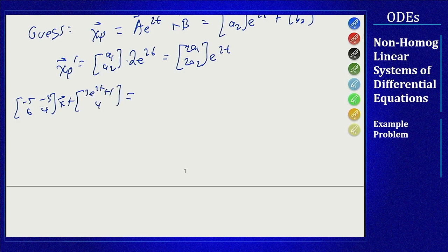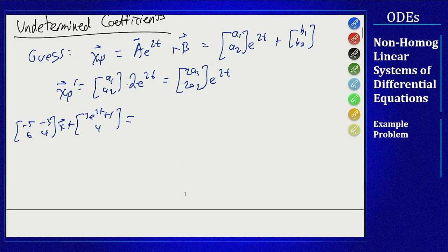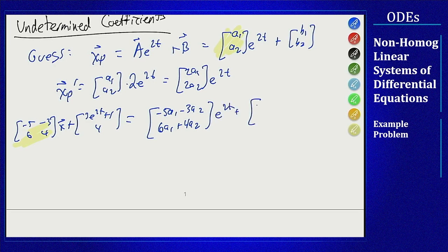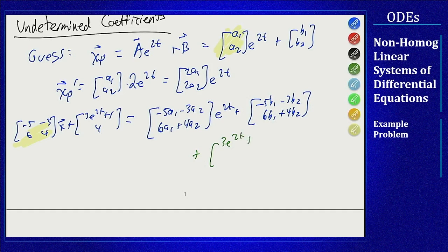First is that this matrix will hit this vector here. When it does that I get a term of the form minus 5a1 minus 3a2, 6a1 plus 4a2 times e to the 2t plus a similar term minus 5b1 minus 3b2, 6b1 plus 4b2 times constant, and then we have the added in term of 3 e to the 2t plus 1 and 4.